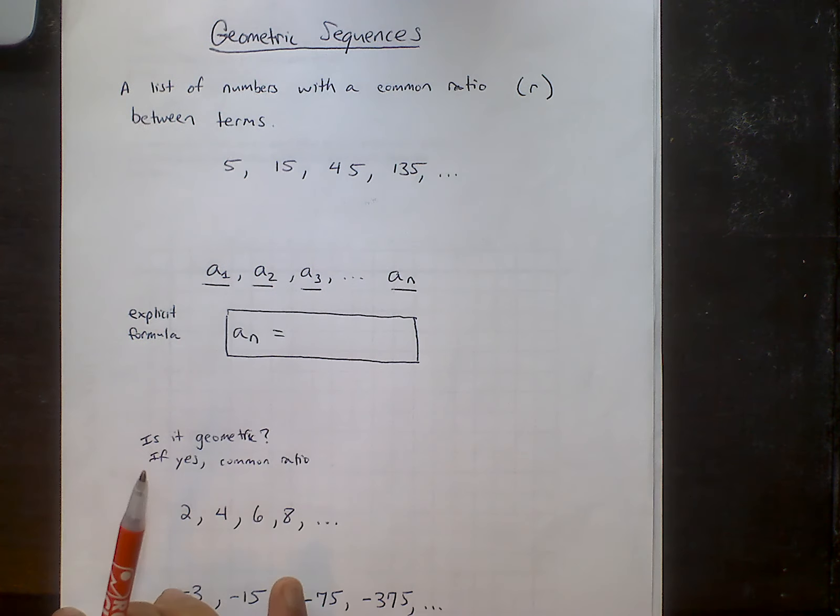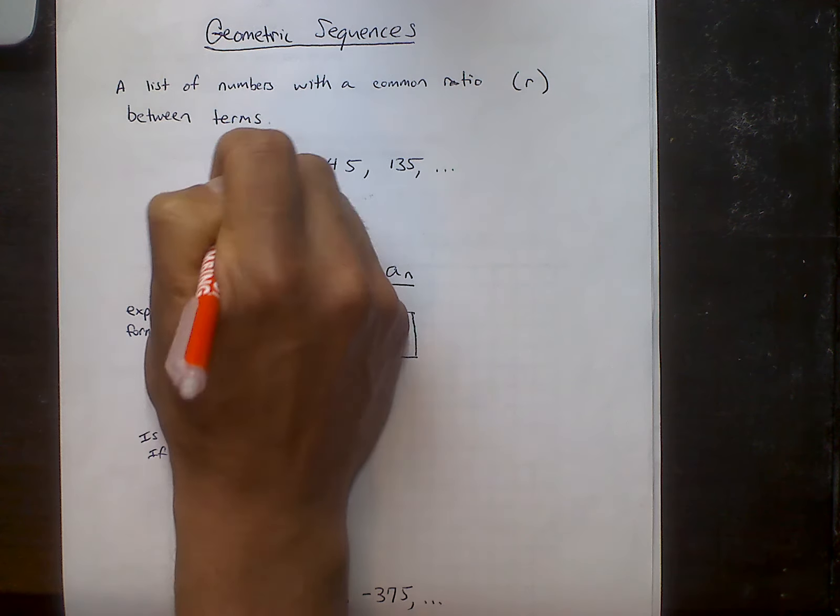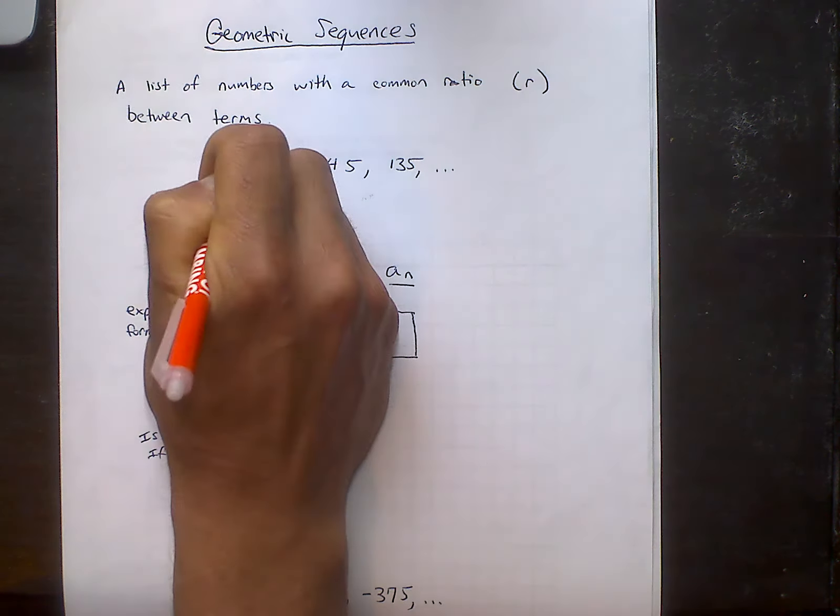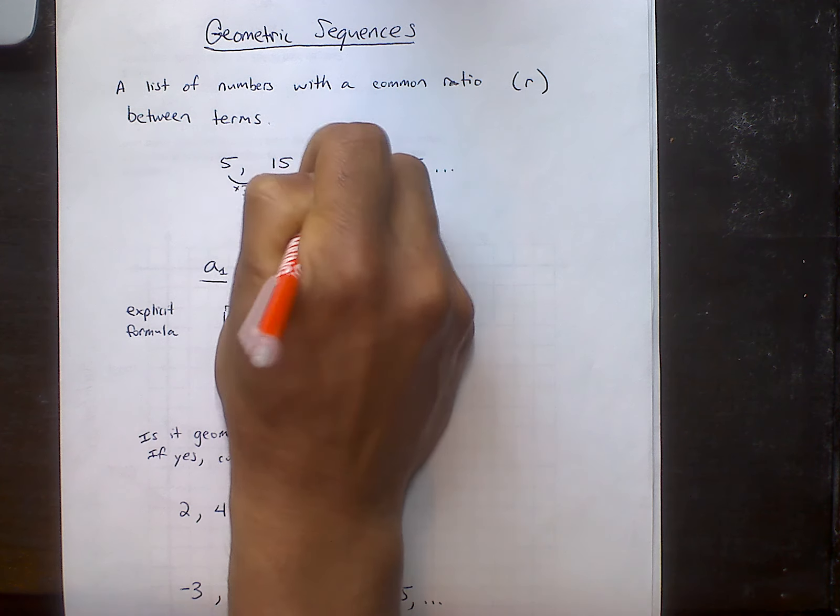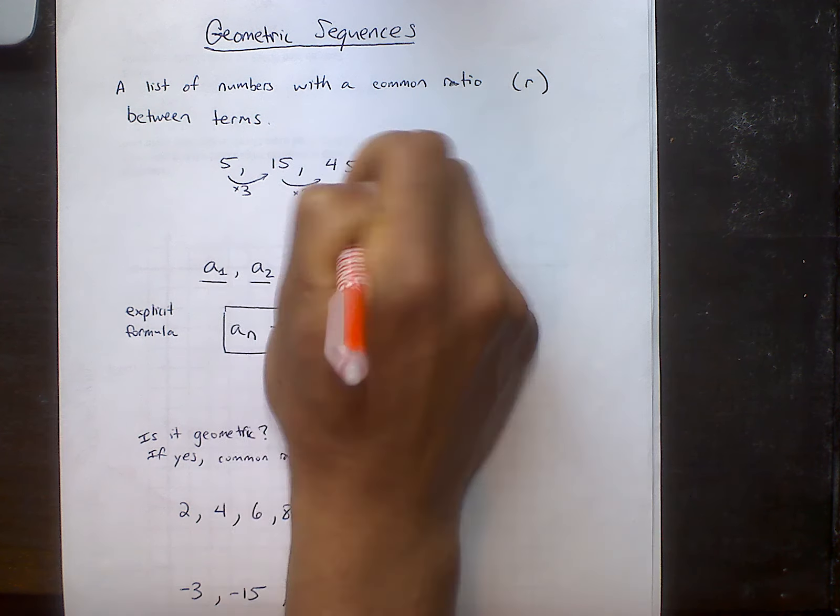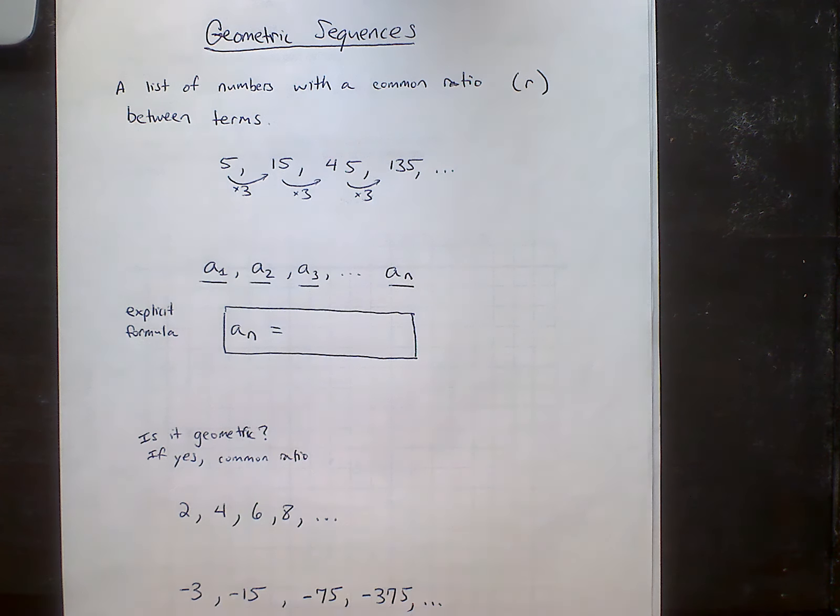If it's geometric, it means there's a common ratio between each of the terms, or in other words, there's a common multiplier. So in this particular case, I know that it's geometric because 5 times 3 is 15. 15 times 3, 45 times 3 brings me the next term. The multiplier is the same to get to the very next term, so the sequence is called geometric.